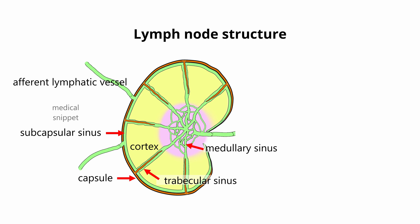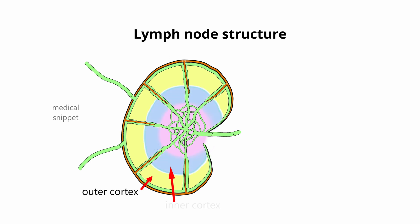From the medullary sinuses, the lymph exits the lymph node via the efferent lymphatic vessels. Beneath the subcapsular sinus is the cortex. The cortex is divided into outer cortex and inner cortex. Inner cortex is also called paracortex.